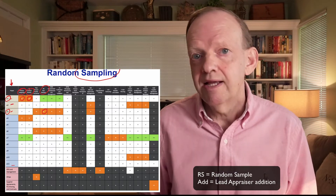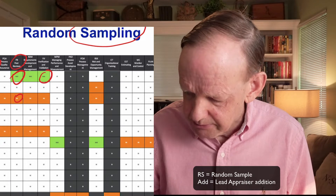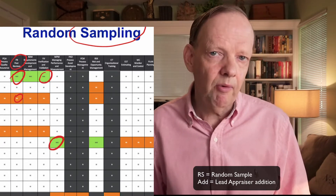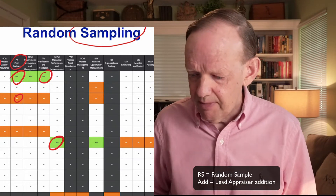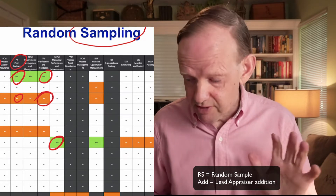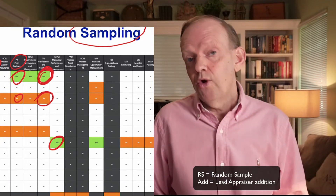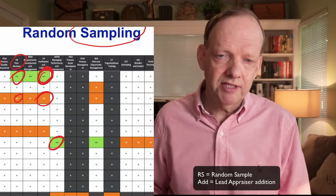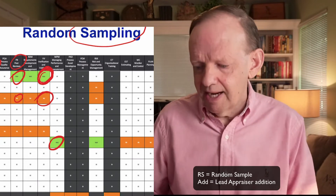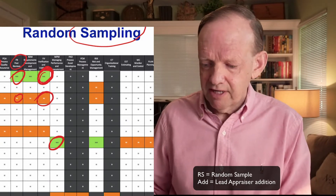The sampling chart shows where orange squares appear — for example, a dev organization sampled for project one on integration activities, or project three for peer reviews. RS means random sample. Out of the whole map, they weren't sampled for everything, only where the orange squares appear, and that's what we look at in the appraisal. As lead appraiser, I can also add green squares called additions.